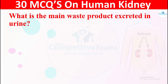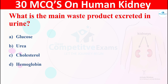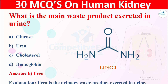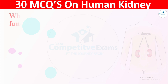Question 9: What is the main waste product excreted in urine? The options are: A) glucose, B) urea, C) cholesterol, or D) hemoglobin. The waste product excreted in urine is urea. Urea is the primary waste product excreted in the urine.